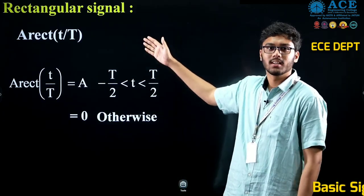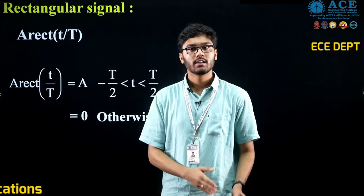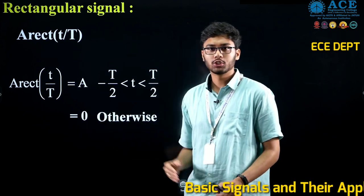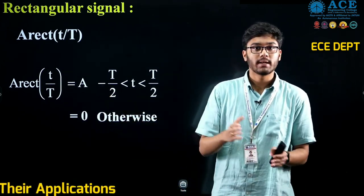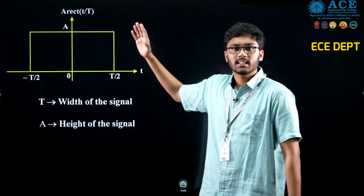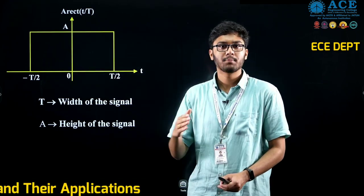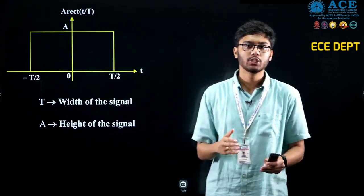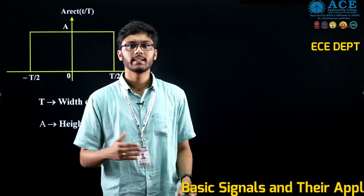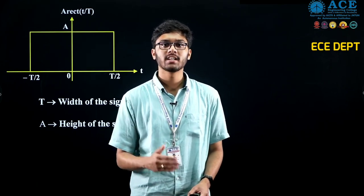The next signal is the rectangular signal, represented by A·rect(t/T). It is defined as: A·rect(t/T) equals A for t between minus T/2 to T/2, and 0 otherwise. The graphical representation shows amplitude equal to A between minus T/2 and T/2, and 0 elsewhere. The real-time application of this signal is that it is used in digital communications and digital electronics to represent binary 1.